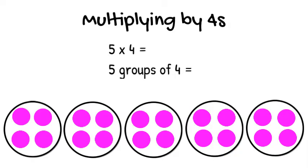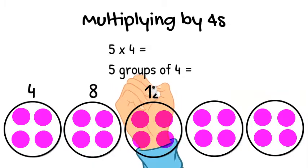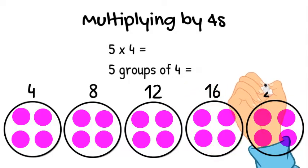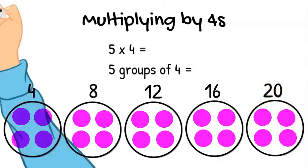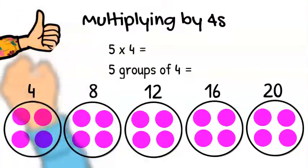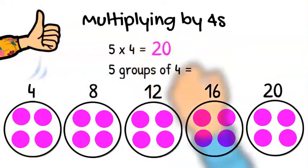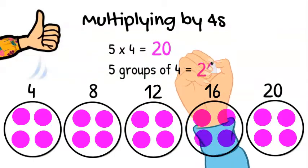So the first circle has four, plus another four makes eight, plus another four makes twelve, plus another four makes sixteen, plus another four makes twenty. Nice job! We found our answer. Five times four equals twenty, or five groups of four equals twenty.